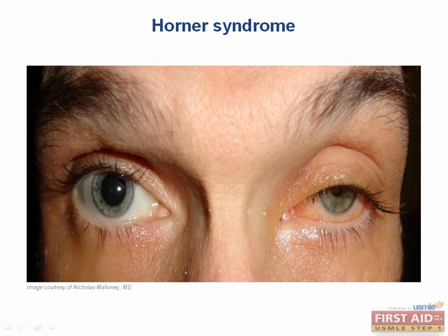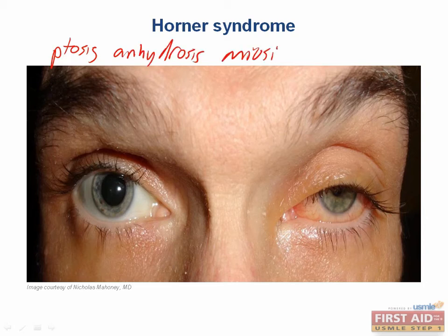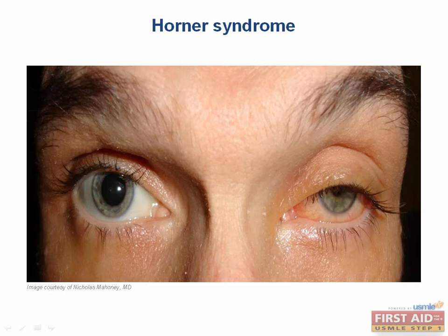Horner syndrome is very interesting. It is caused by impairment of the sympathetic system's innervation to the face. It includes a classic triad of ptosis, anhydrosis, and miosis. You can also sometimes see anisocoria, which is unequal size of the pupils. This picture is a good illustration for miosis as well as ptosis.